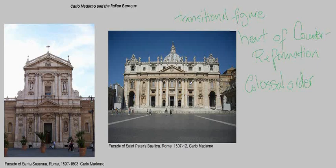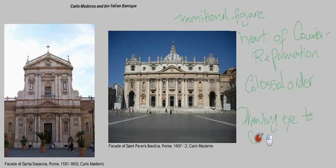Another important thing you should know about Carlo Maderno particularly is that he was famous for drawing the visitor's eye to the central portal of his church facades. That might sound like a strange thing — how does architecture draw your eye? It's not like there are arrows pointing at the central portal, but in a sense architecture can do that through other architectural elements. It can direct your attention to what it wants to direct your attention to. So how exactly does he do that on both of these church facades?